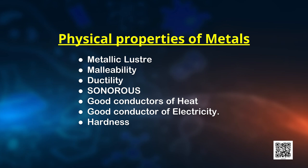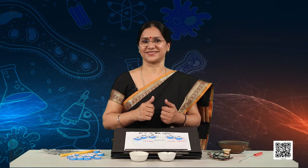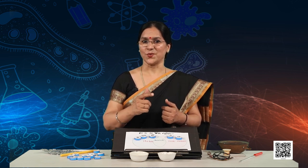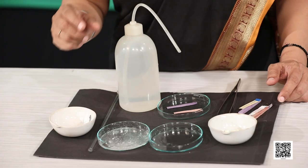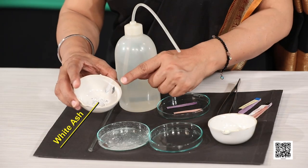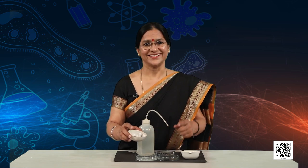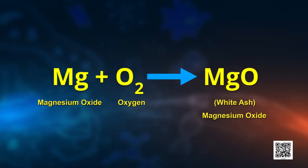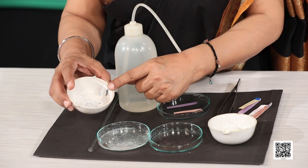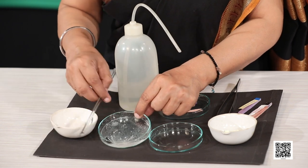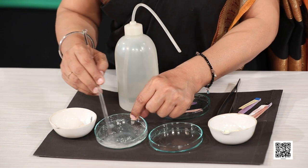Elements can be more clearly classified as metals and non-metals on the basis of their chemical properties. Recall from chapter 1 that magnesium ribbon burns in air with a dazzling white flame. Now it is time for a small activity. I have here this white ash collected after burning of magnesium ribbon. Can you recall what this white ash is? Yes, it is magnesium oxide. I mixed this magnesium oxide with water and stirred it to get this solution.